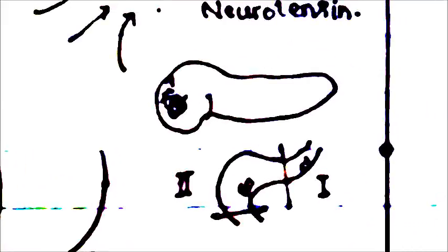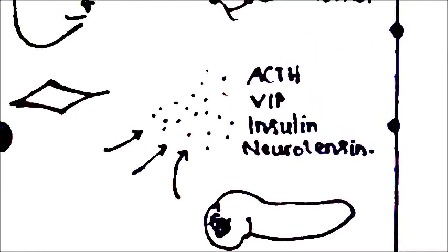50% of gastrinomas are in the head of the pancreas, and 50% in the wall of the first or second portion of duodenum. Two-thirds of the tumors are malignant. Half of them can produce ACTH, vasoactive intestinal polypeptide, insulin, or neurotensin.